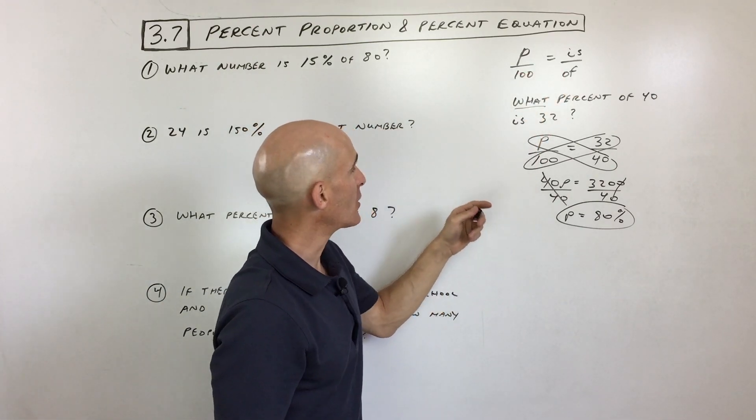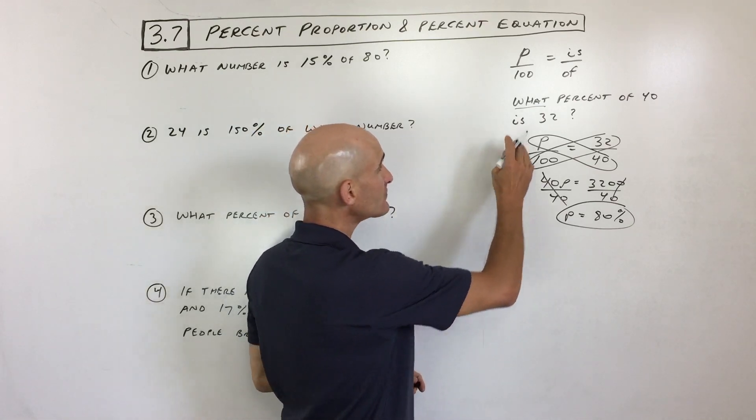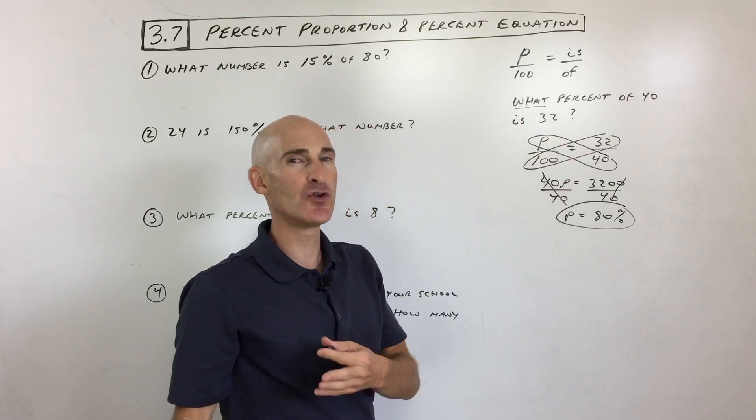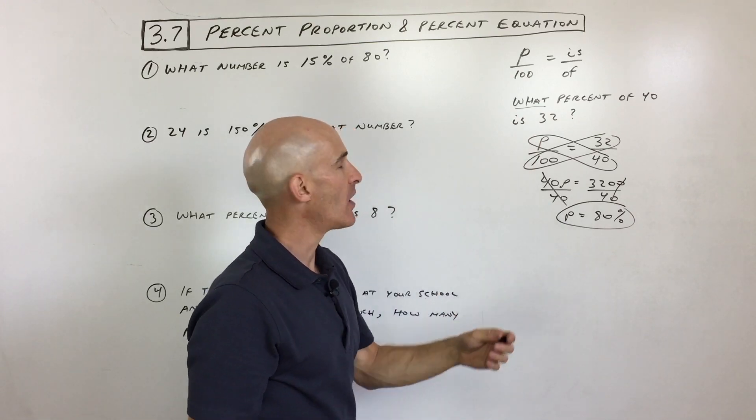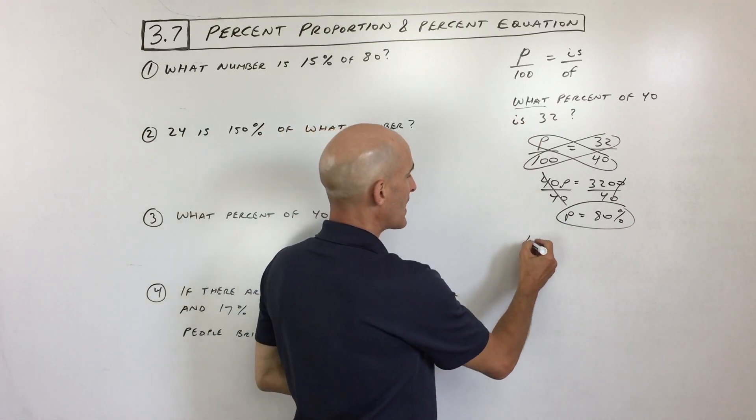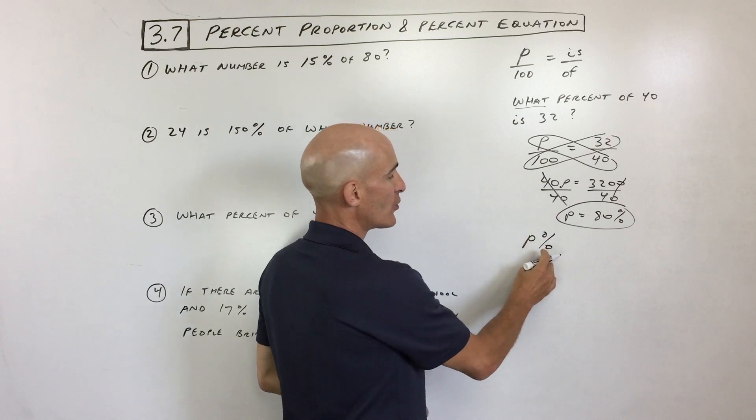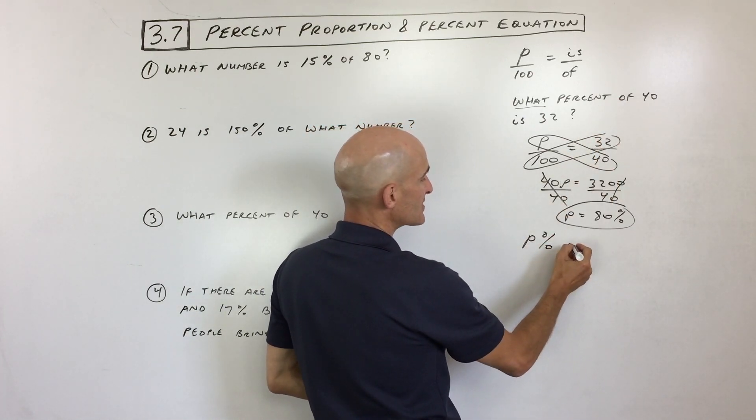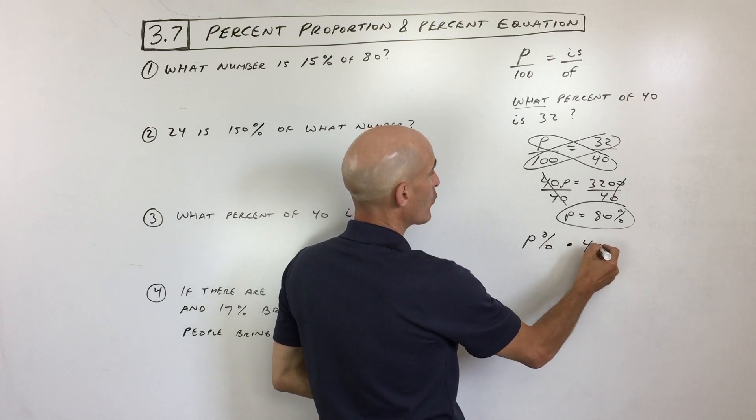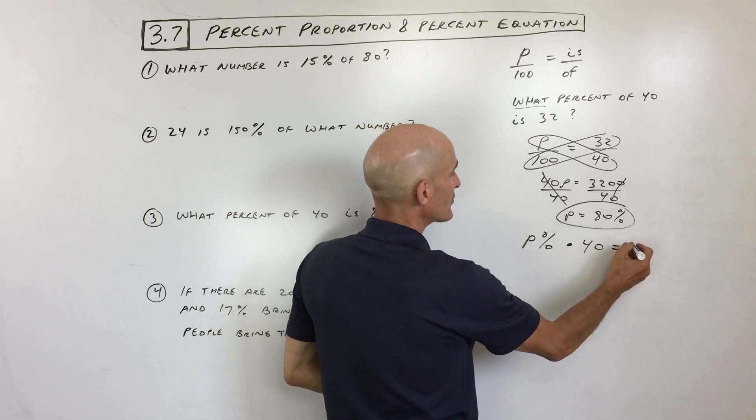The percent equation way of solving is like this. It's just like translating something. Like if you know a different language, it's like taking each word and translating it into that other language. So what percent? I'm just going to write P percent because we don't know. That's the variable. Of, whenever you see the word of, that means times 40. Is means equals 32.